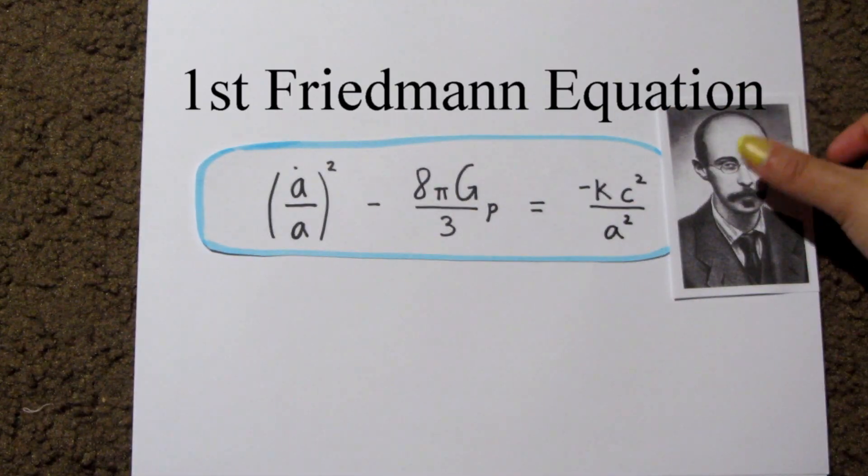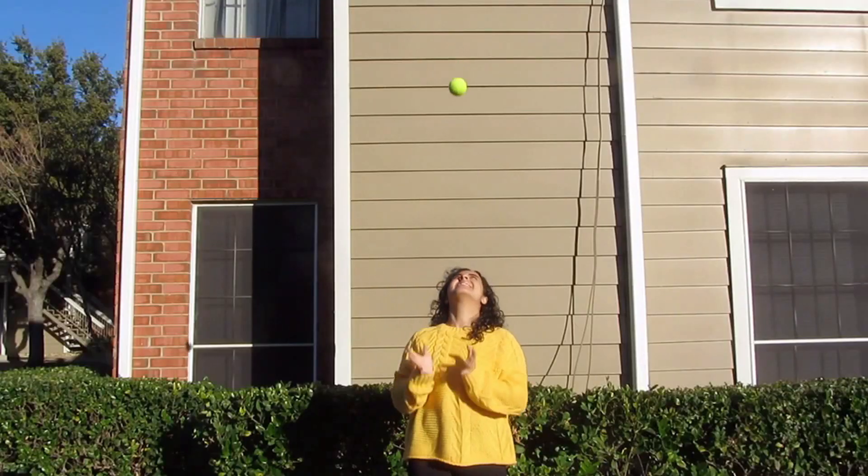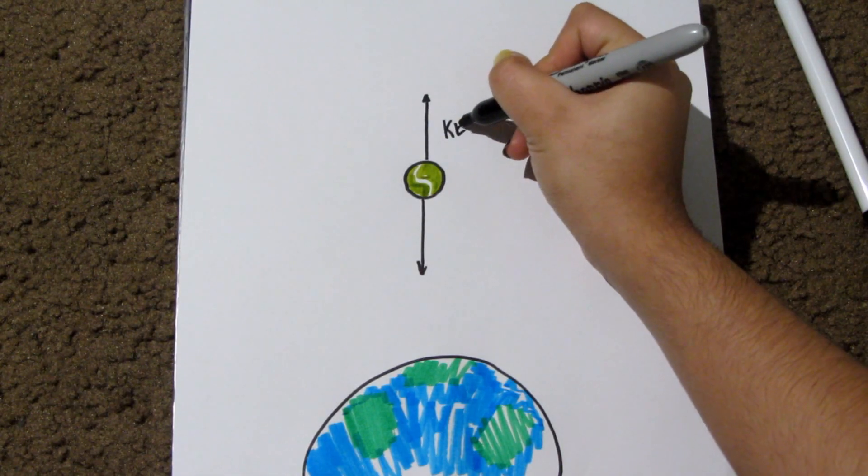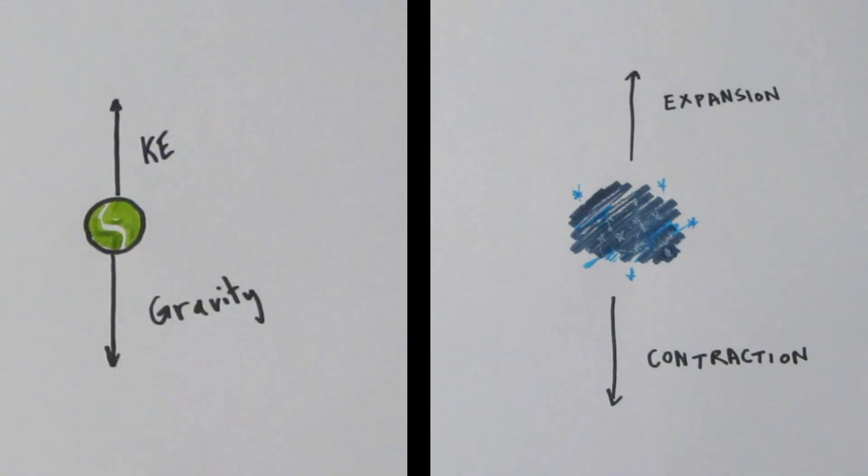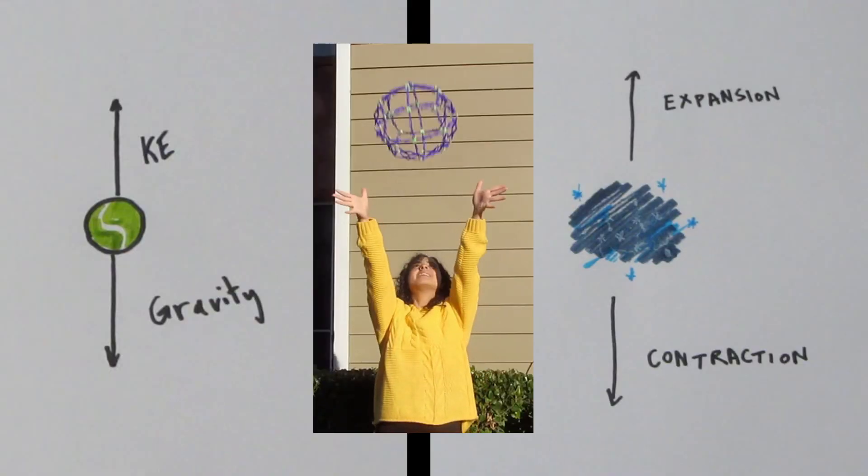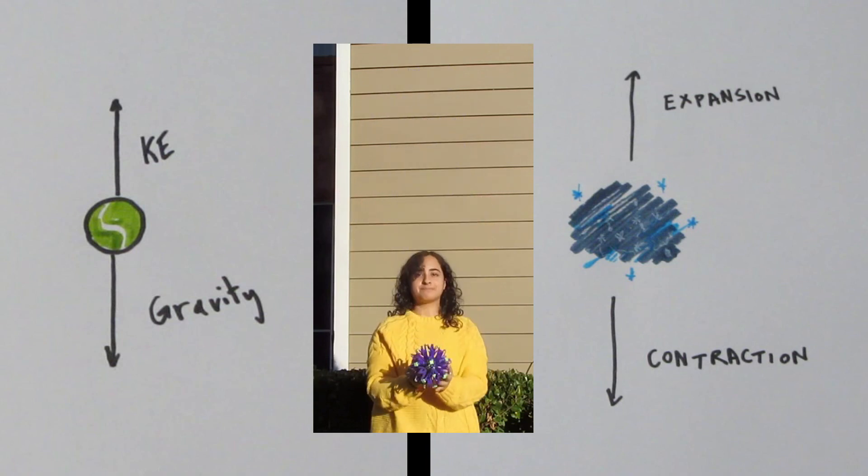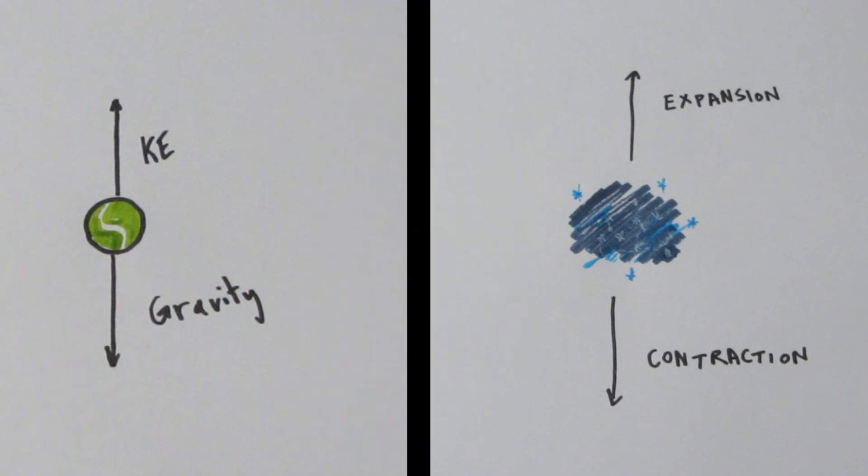To understand, we need the first Friedman equation. It kind of describes the universe like a ball. Just as a thrown ball is driven upwards by its kinetic energy and pulled back down by gravity, the universe is driven towards expansion by a sort of kinetic energy and pulled in towards contraction by the gravity of all the stuff in the universe.